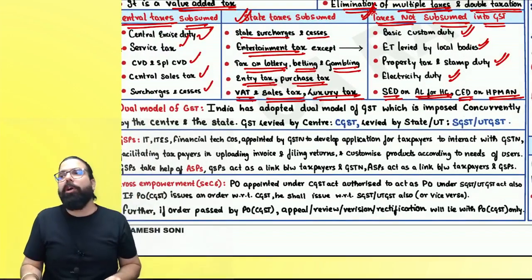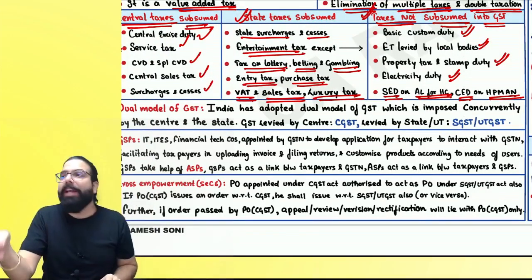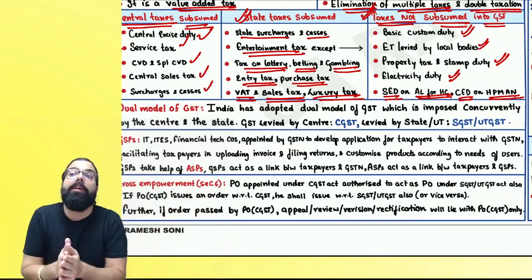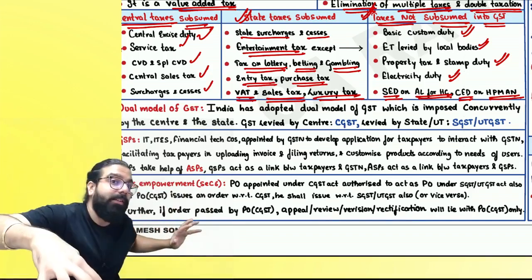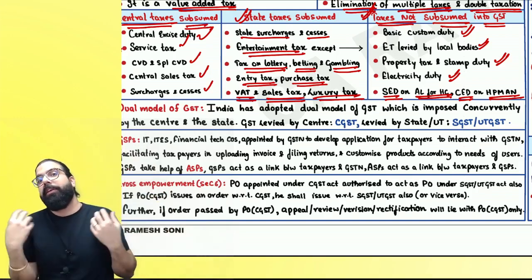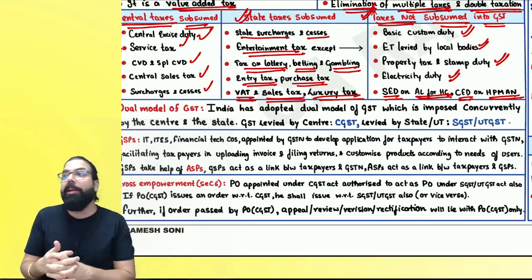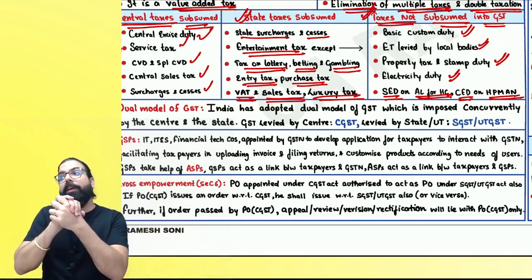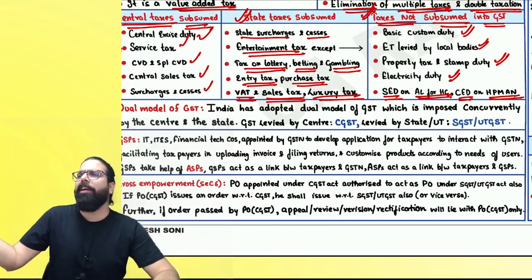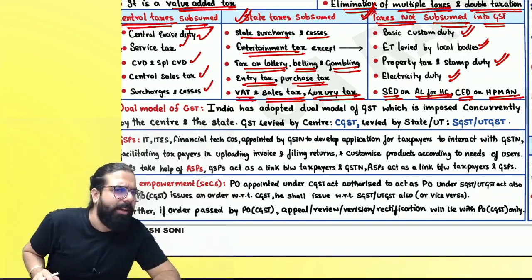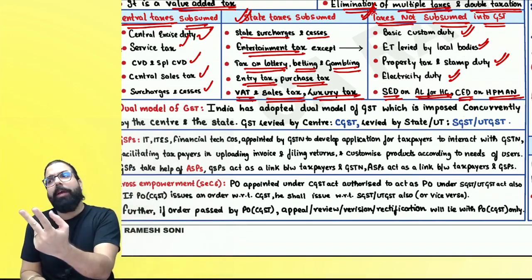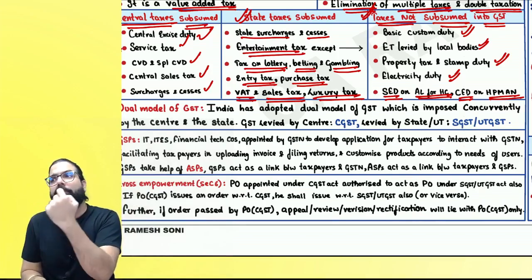Next: dual model of GST. In any transaction in India, both governments — central and state — will charge the tax simultaneously. Central government charges CGST; state government charges SGST. If it is a union territory, UTGST shall be charged instead of SGST. Both governments simultaneously charge tax on every transaction.